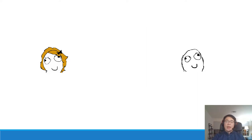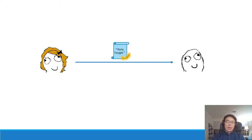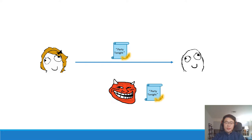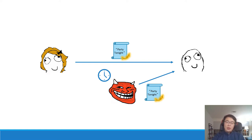In the last example, Alice is holding a party and sends a party invitation to Bob with a signature attached, stating there is a party tonight. Eve eavesdrops and copies the message and signature. Then on a Tuesday night when everyone is busy, Eve simply replays the message and signature to Bob. From Bob's point of view, he receives a message from Alice saying there's a party, and seeing a valid signature, goes to Alice's place only to find no party at all. This is what we call a replay attack for signatures.